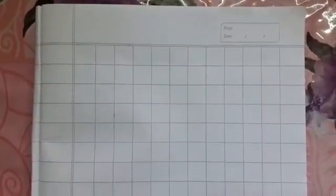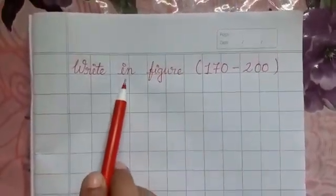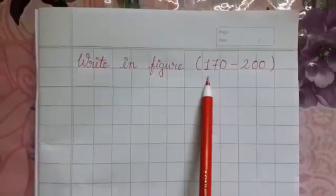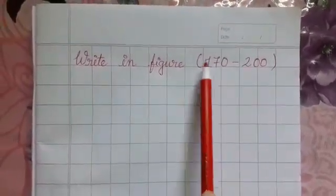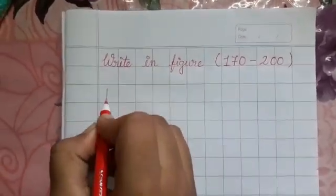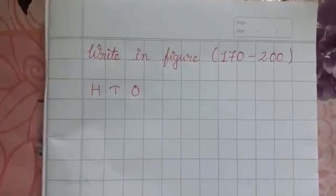Today from 170 onwards we will start. Now as you can see, this is how our maths pages look. We will write in this page. Now this is the page. I have written the heading here. W-R-I-T write I-N in F-I-G-U-R-E figure. Write in figure. 170 to 200. We will keep this in a bracket. Now after giving one line gap, we are going to write this H-T-O.